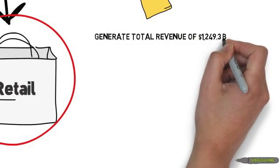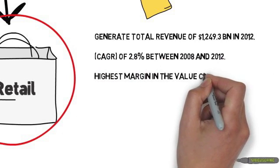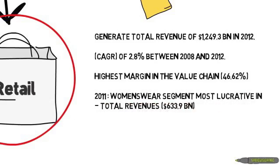We decided to focus on the retail industry. The reasons were simple: it has the highest revenues at $1.2 billion per year, the current CAGR is 2.8% over the last four years, and this is the highest margin throughout the entire value chain.